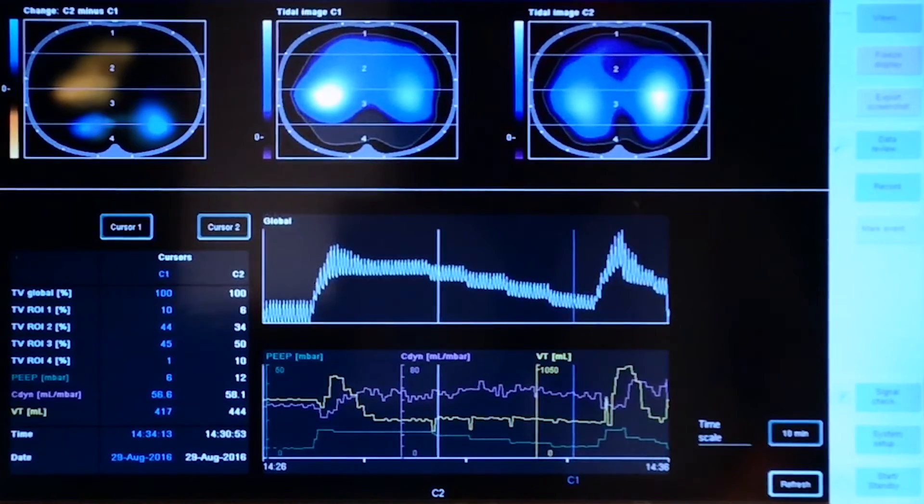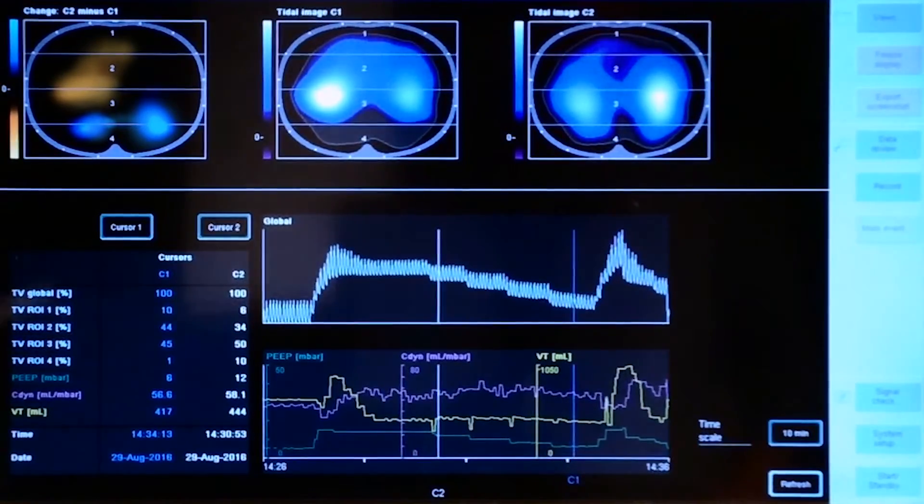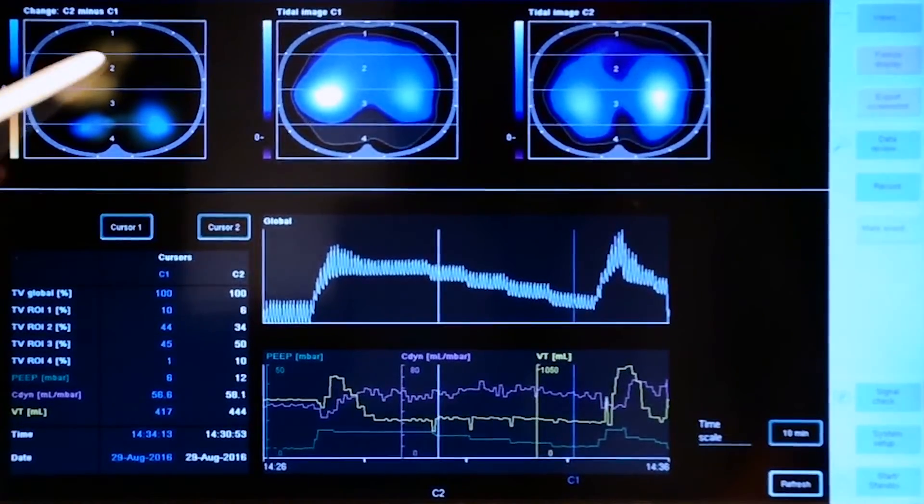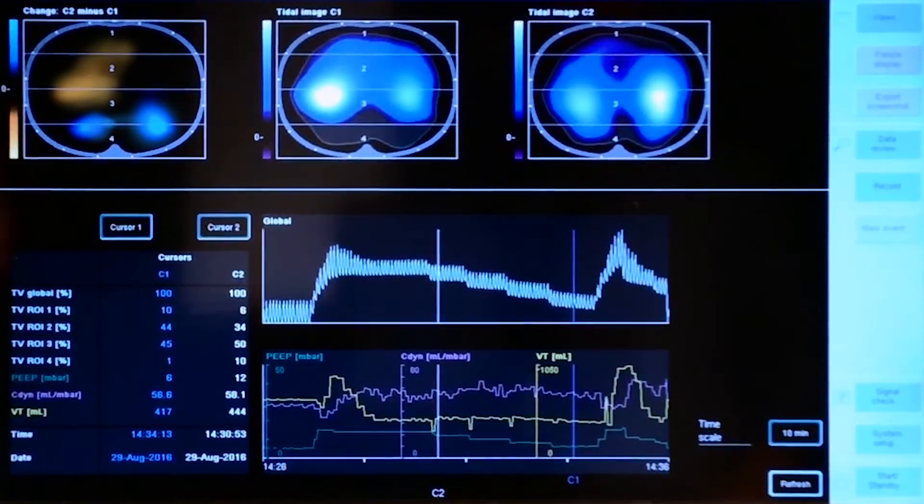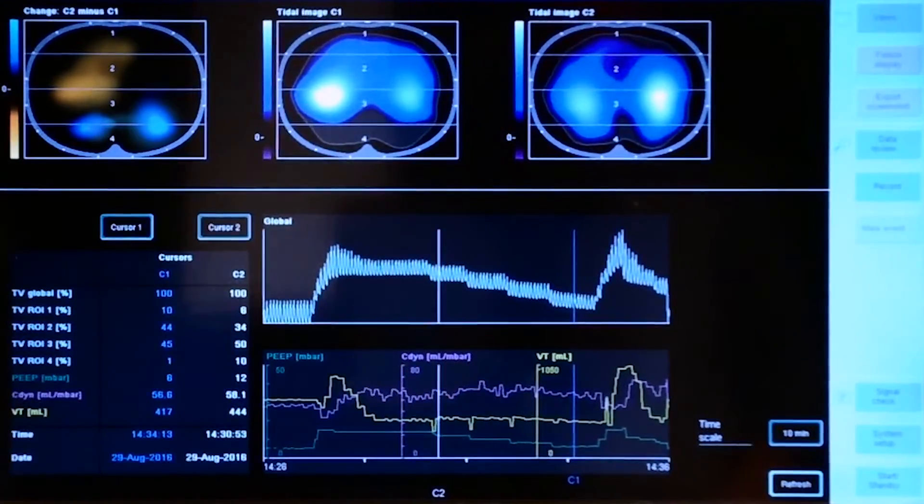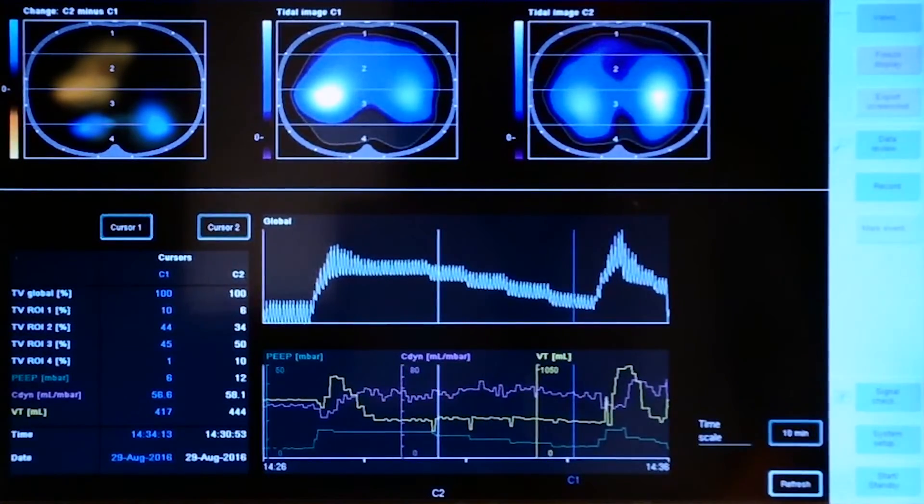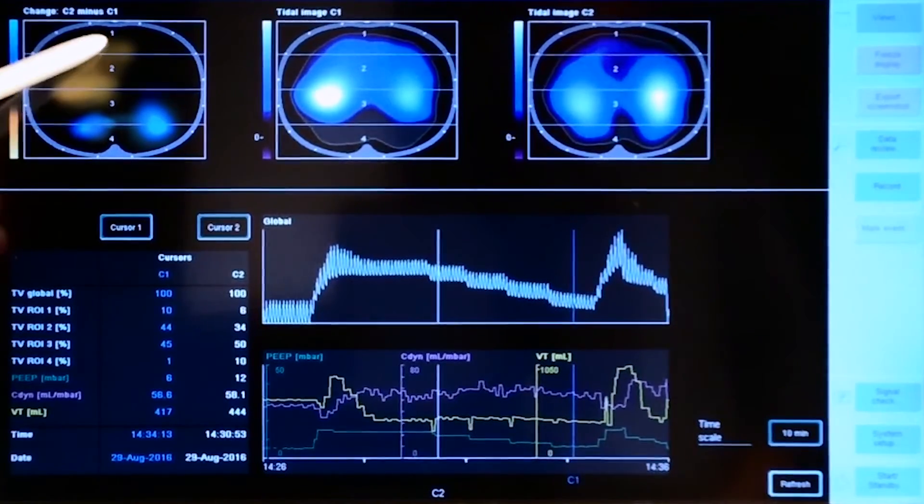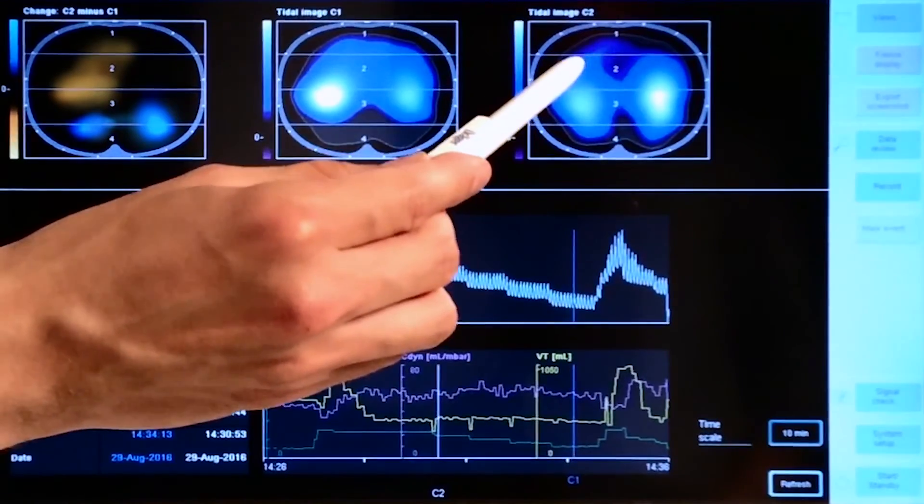Another interesting fact is that we can see this decrease of ventilation in the orange part. But when we take a look on tidal image number 2 we can see that these regions are still being ventilated. So there is a certain drop of ventilation but these regions are still being properly ventilated.